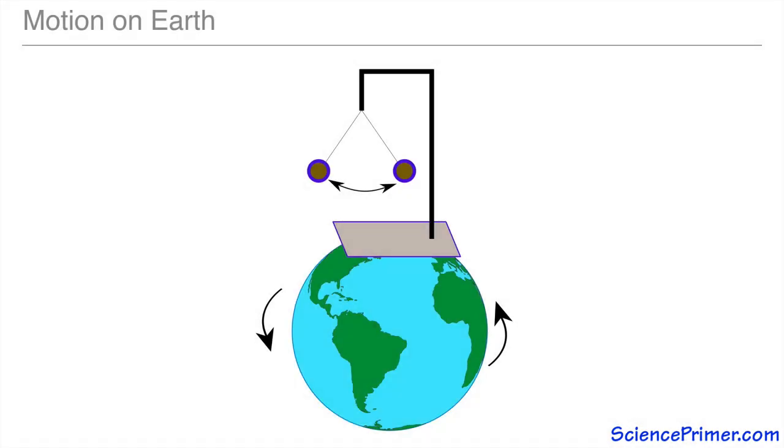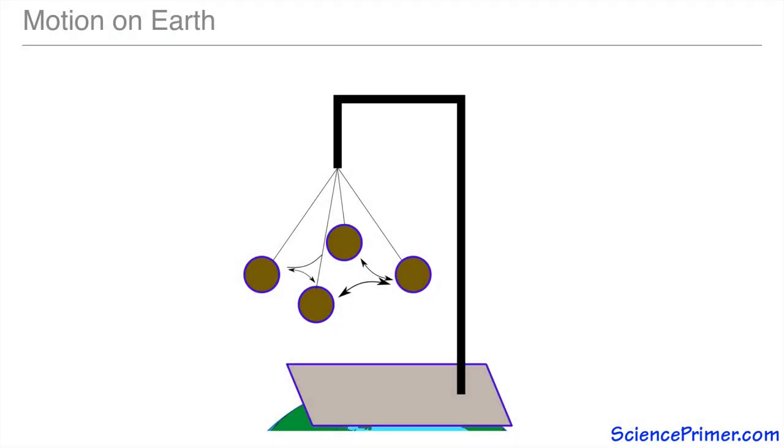Now consider a pendulum swinging on Earth. An observer from space who is not rotating with the Earth would see the Earth rotate but the pendulum would swing back and forth in the direction of the initial swing. If, on the other hand, the observer was on the Earth, suddenly the Earth would not appear to be moving and the pendulum would follow a complex, curved path as it swung back and forth independent of the rotation of the Earth.